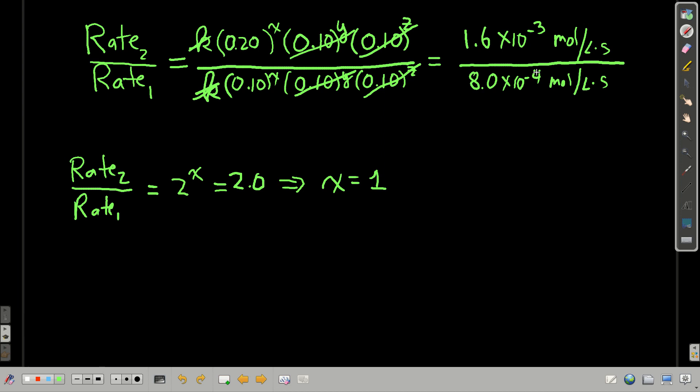These numbers over here, these are the initial rates from the experiment that we got out of that table there. So once all this stuff cancels, 0.20 to the x over 0.10 to the x ends up being 2 to the x.